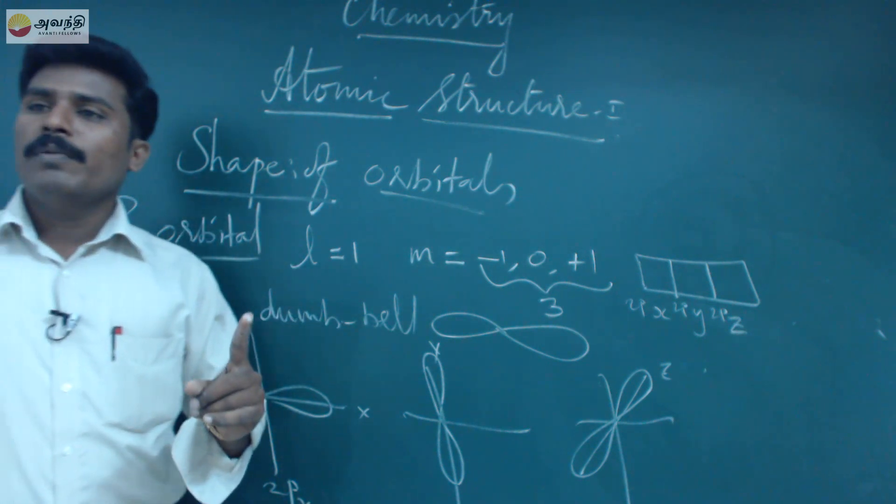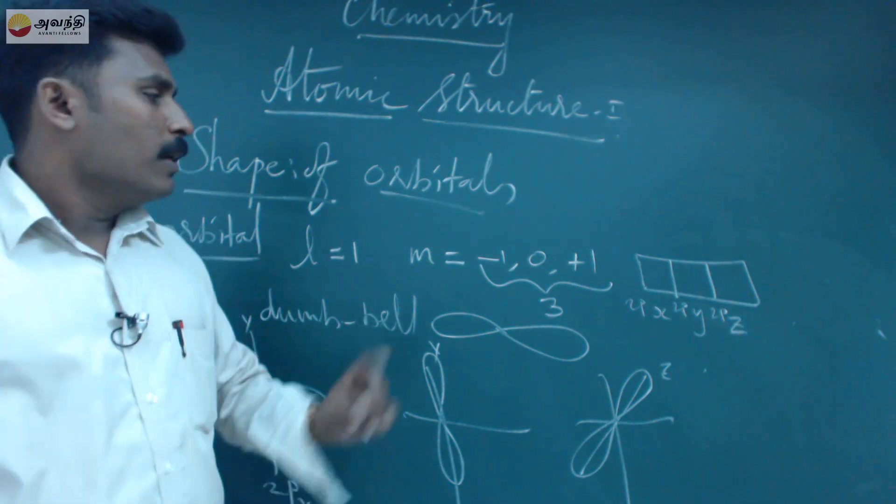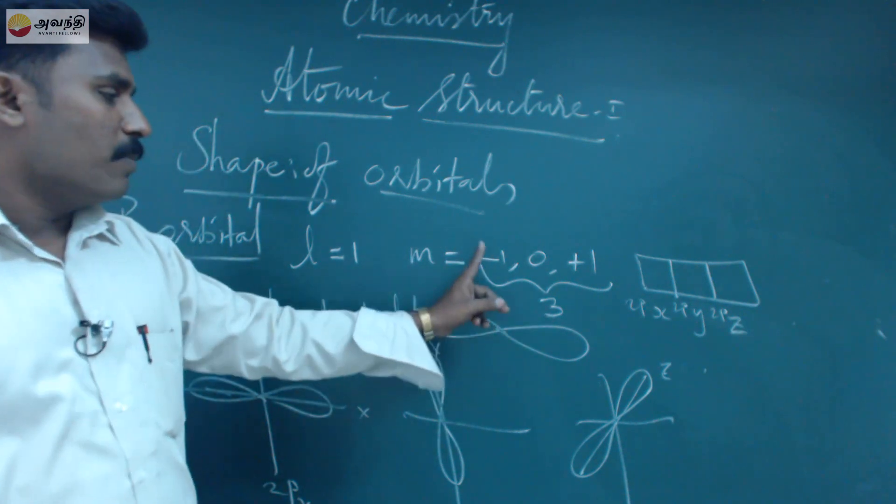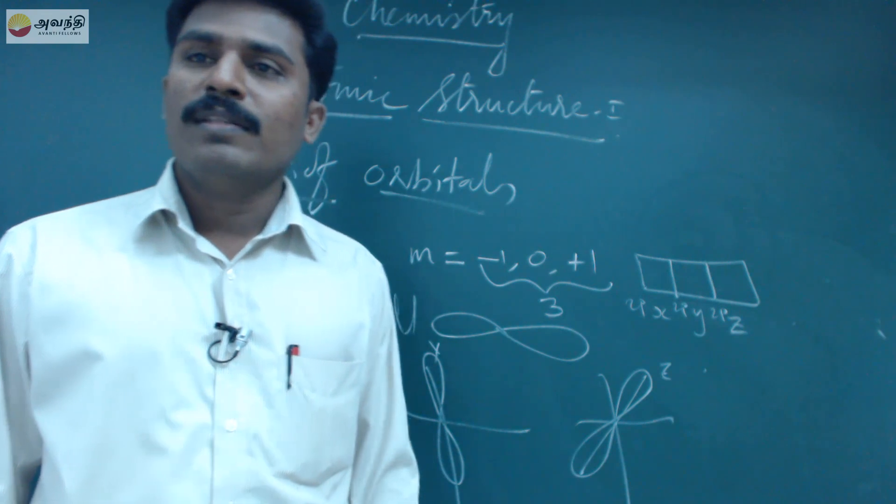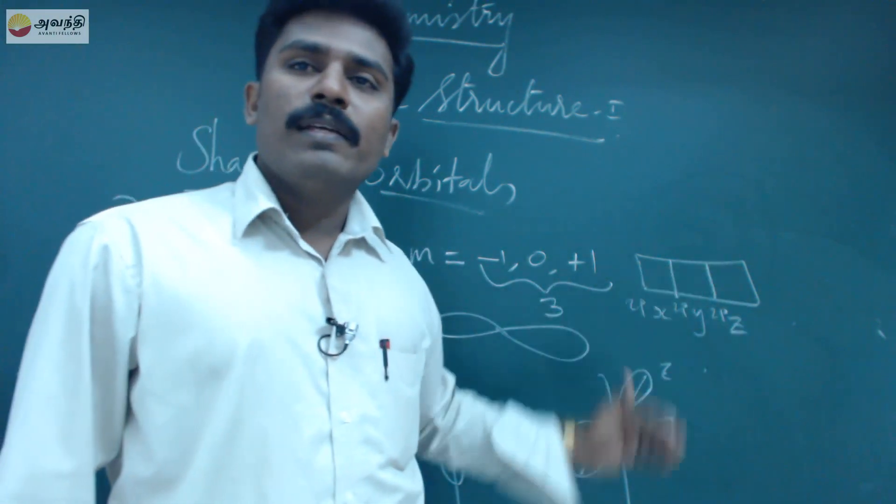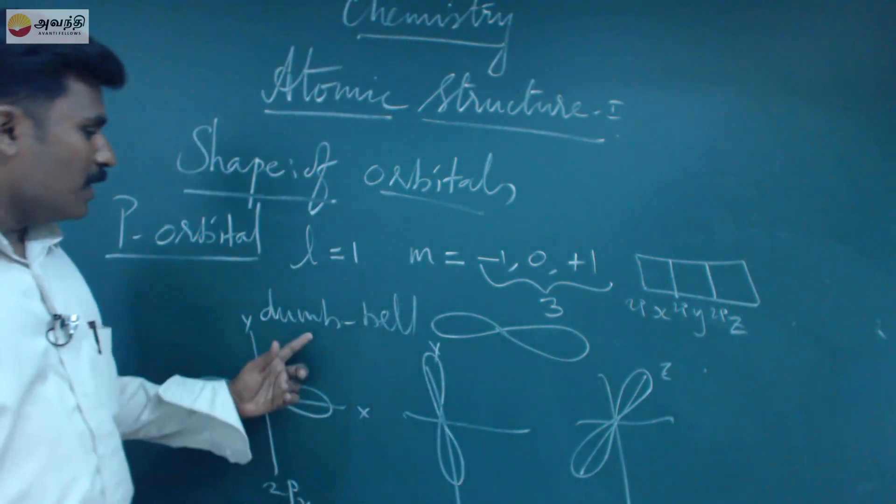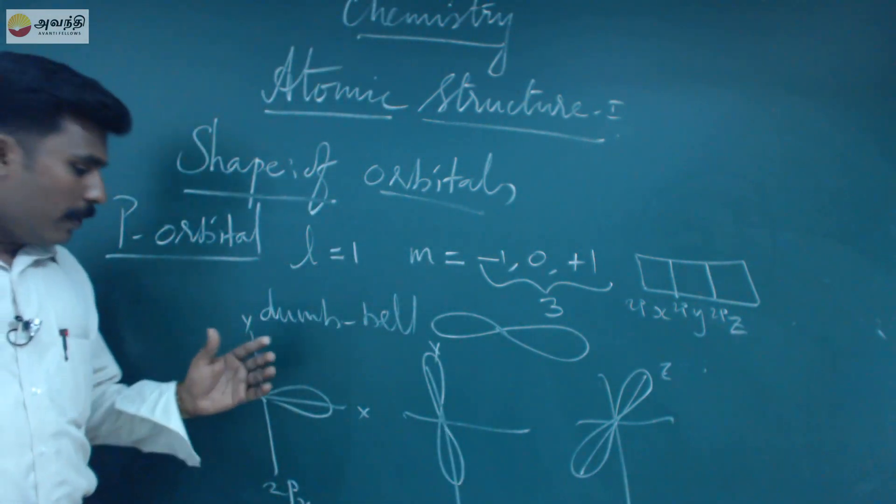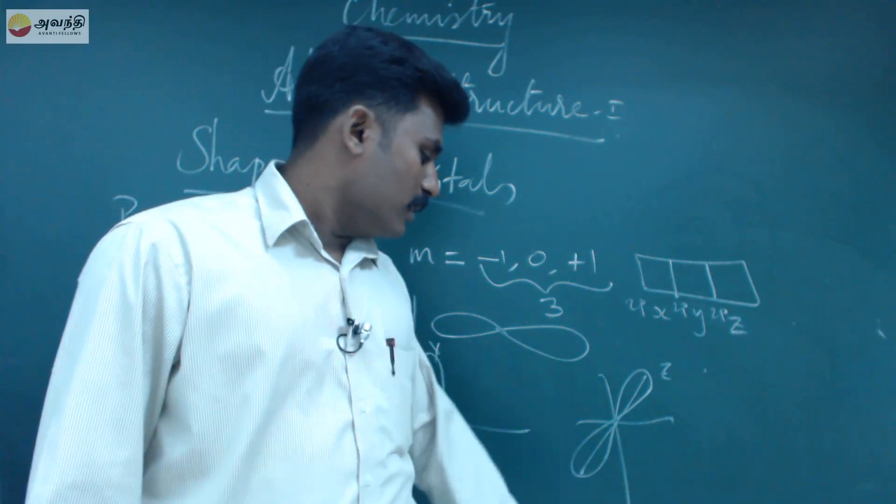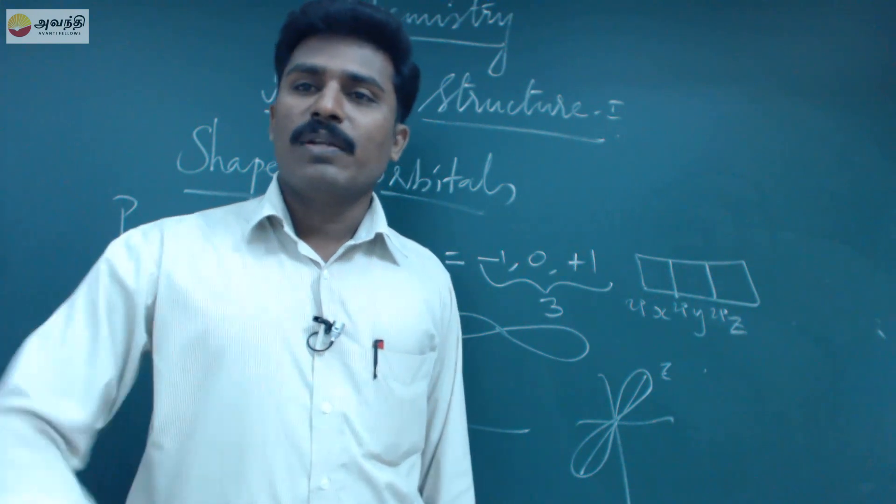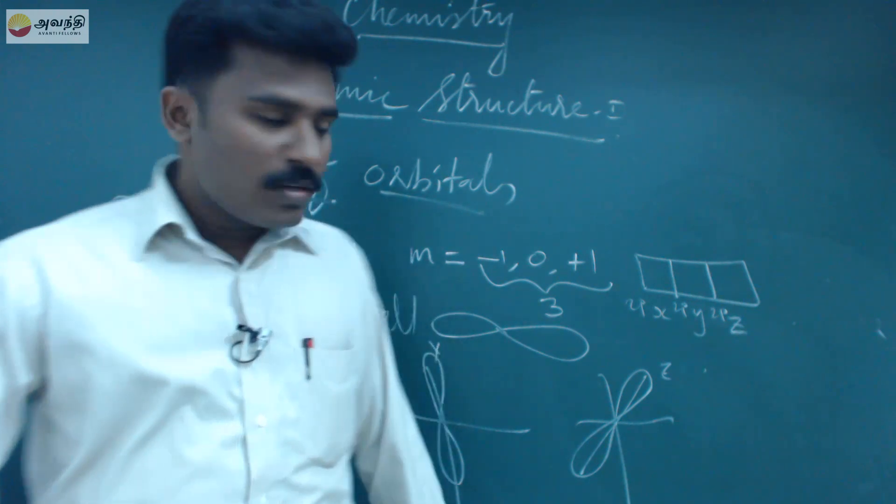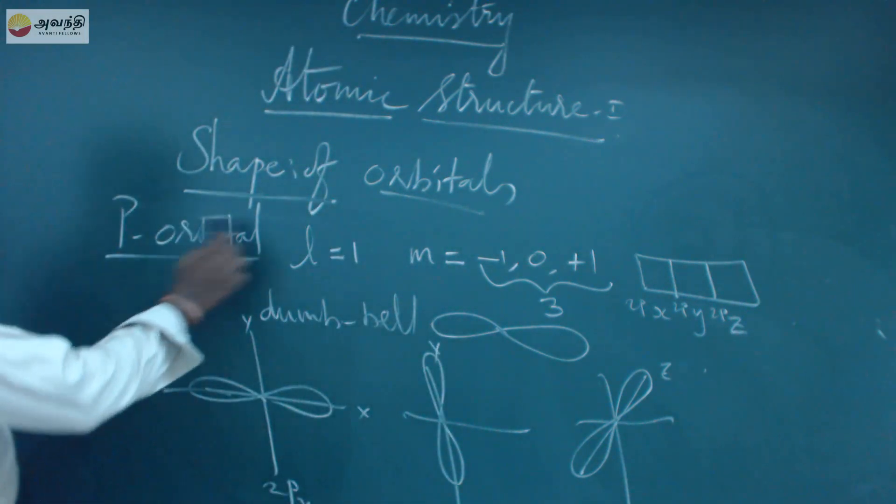The l value is one, azimuthal quantum number is one, which means three orientations are possible. The p orbital splits into three types: px, py, and pz. The shape is dumbbell shape along the respective axes. Next, the very important d orbital.